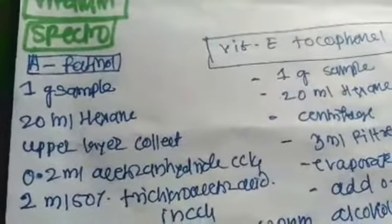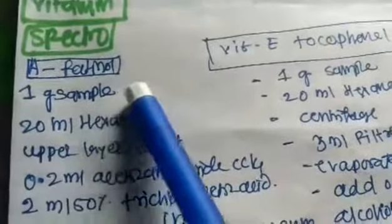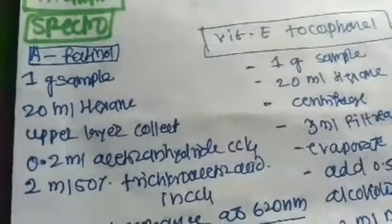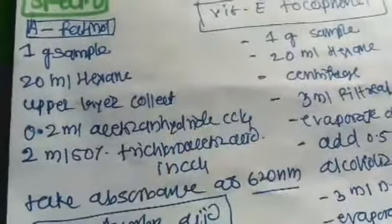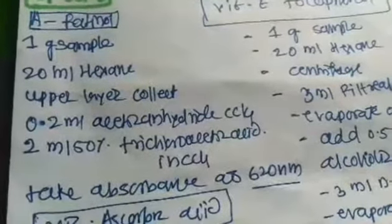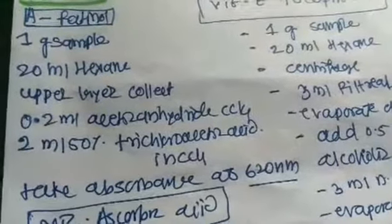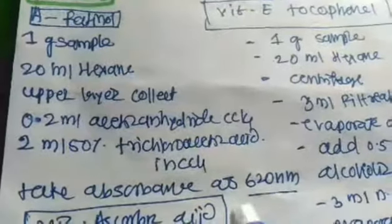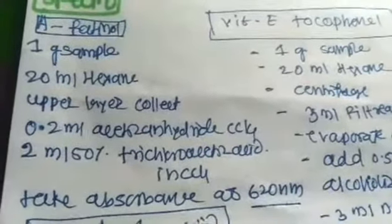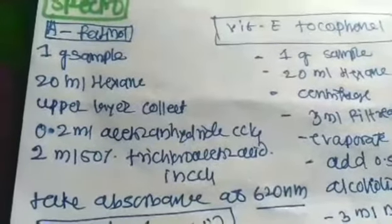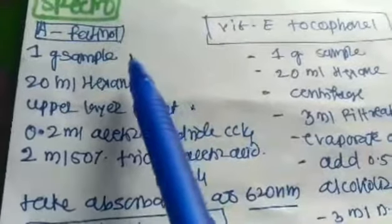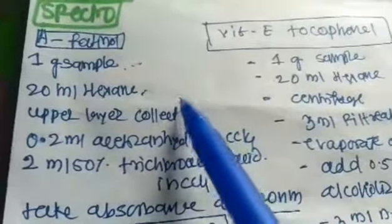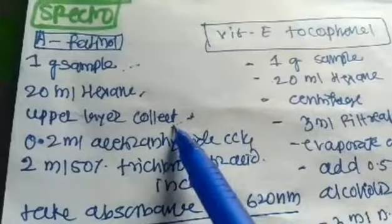Vitamin A is soluble in hexane. Take one gram of sample and add 20 ml of hexane in a separating funnel. Collect the upper layer and add 0.2 ml acetic anhydride in CCl4 and 2 ml of 50% trichloroacetic acid. Take the absorbance at 620 nanometers.